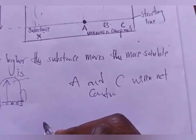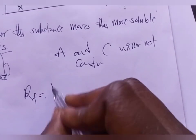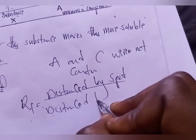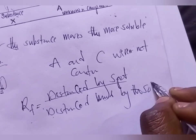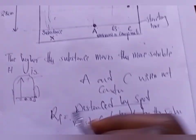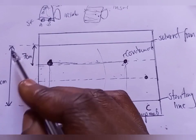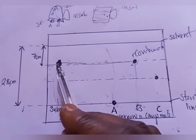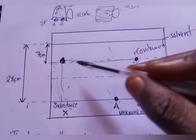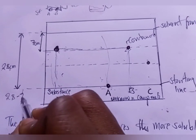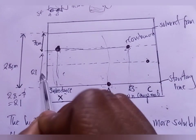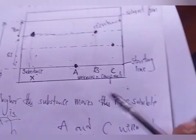The other question asks you to find the RF value. RF means retardation factor, and it equals the distance moved by the spot over the distance moved by the solvent. The question asks for the retardation factor of component B. The total distance from the starting line to the solvent front is 28. From the starting line to spot B is 28 minus 7, which gives 21. So from the start to spot B, the distance is 21.